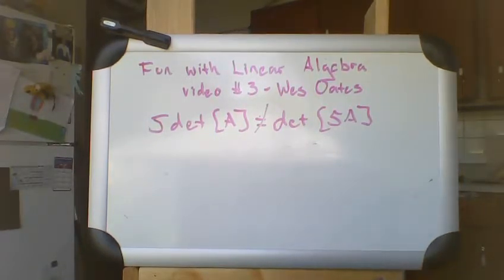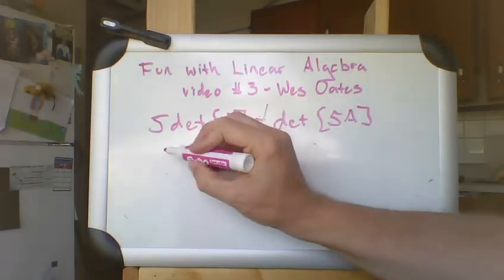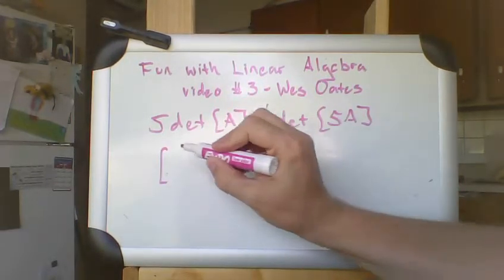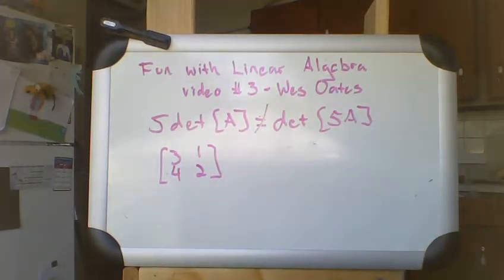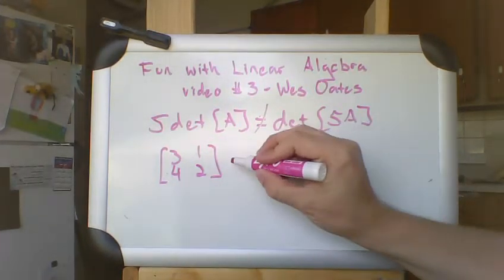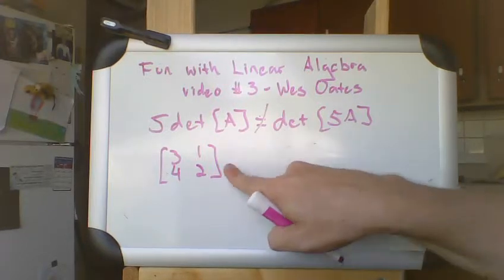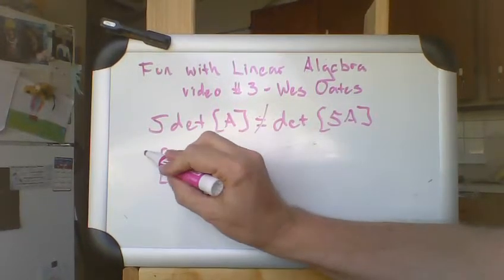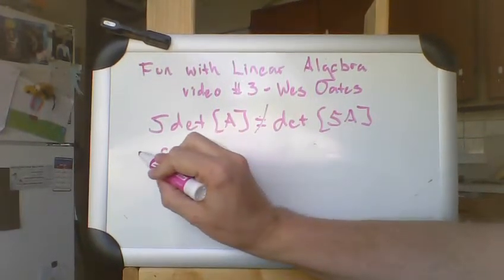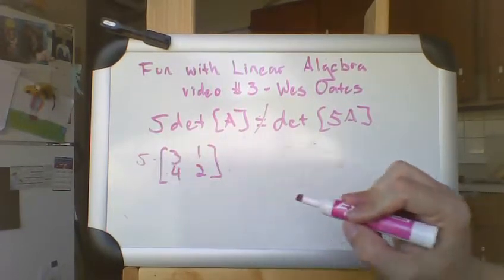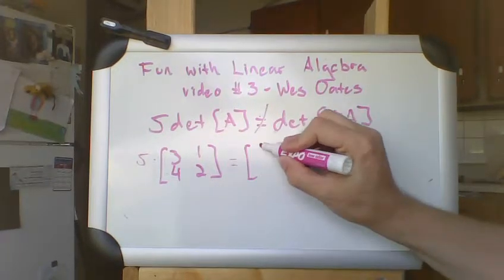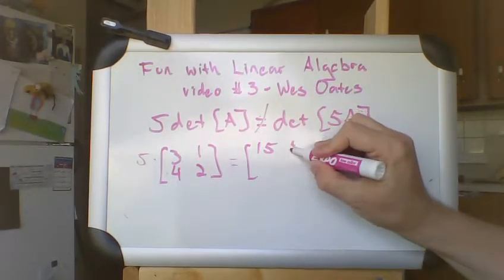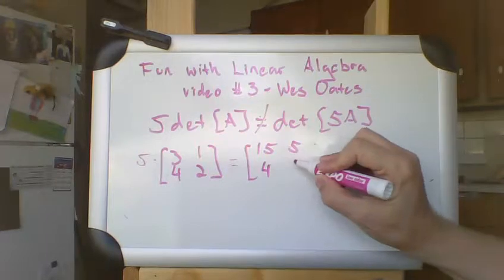So if you were to take the original matrix 3, 1, 4, 2, and if you were to multiply just the top row, so we're going to take 5 times just that top row, probably ugly notation there but that's okay, we're going to get 15, 5, 4, 2.